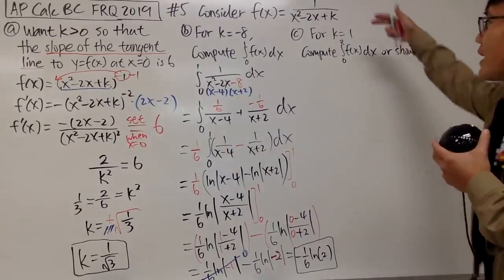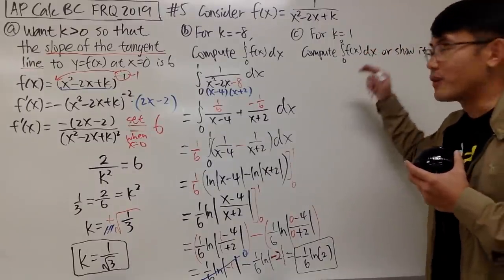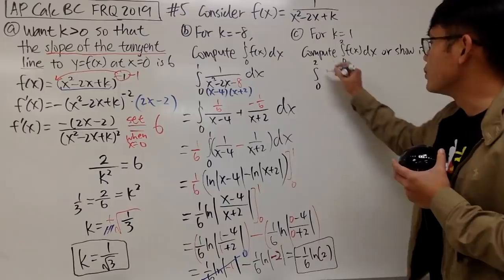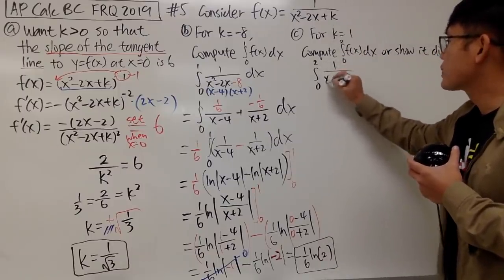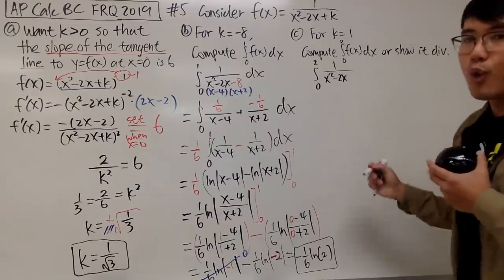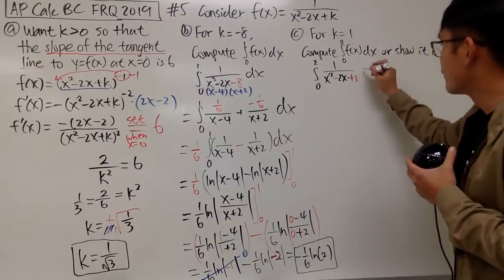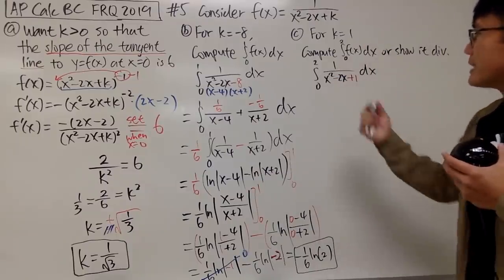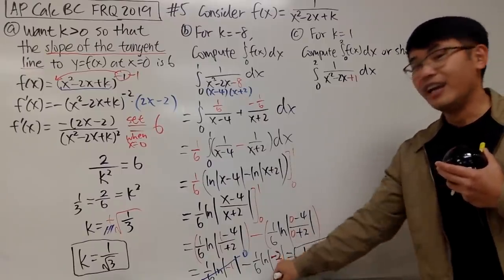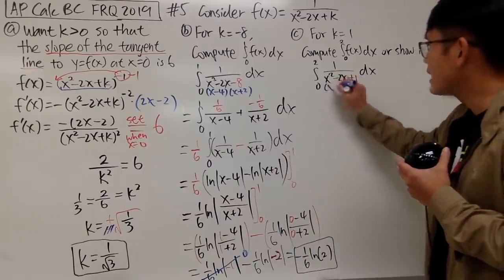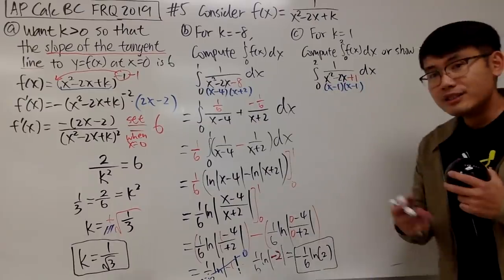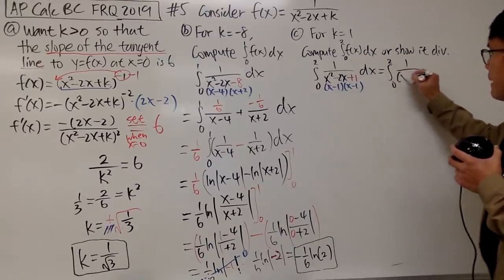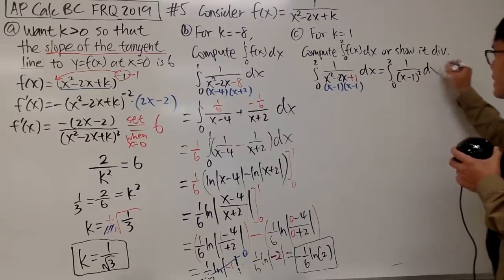Finally, for k equals 1, we are going to compute the integral from 0 to 2 — if possible. We have the integral from 0 to 2 of 1 over x squared minus 2x plus 1, dx. It seems like we have to do partial fractions, but not really — because when we factor this out, we get (x minus 1) times (x minus 1). So this is actually the integral from 0 to 2 of 1 over (x minus 1) squared, dx.